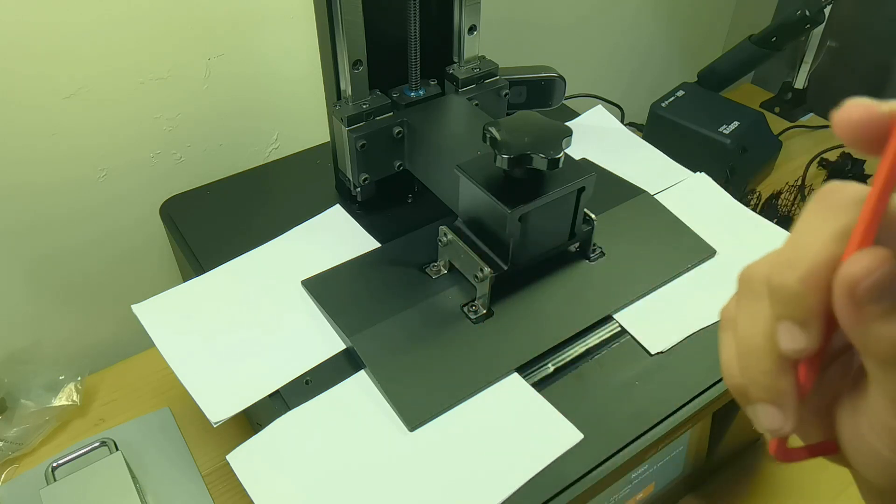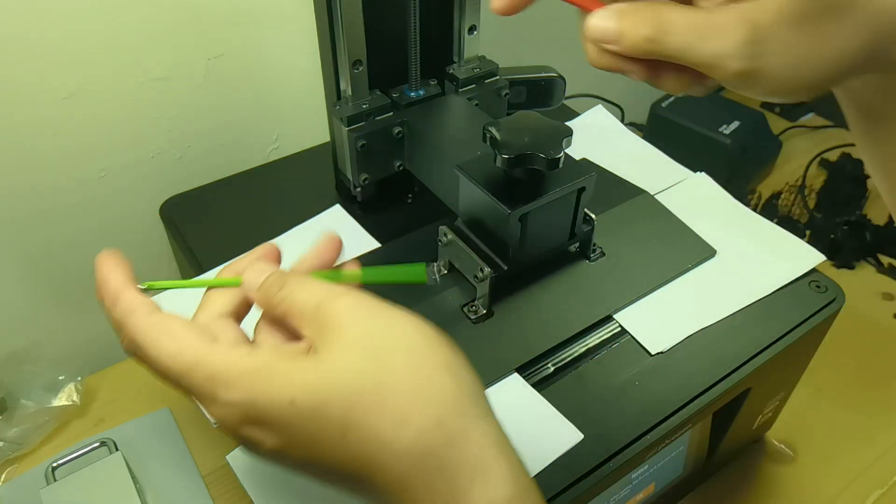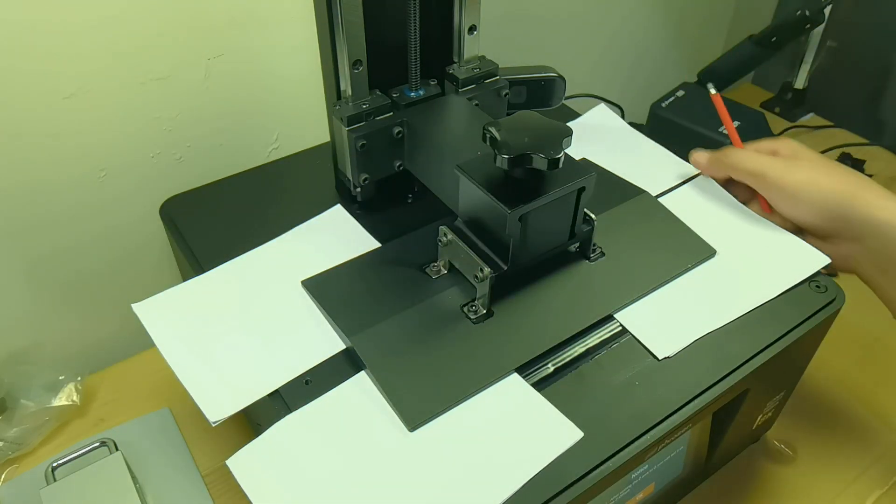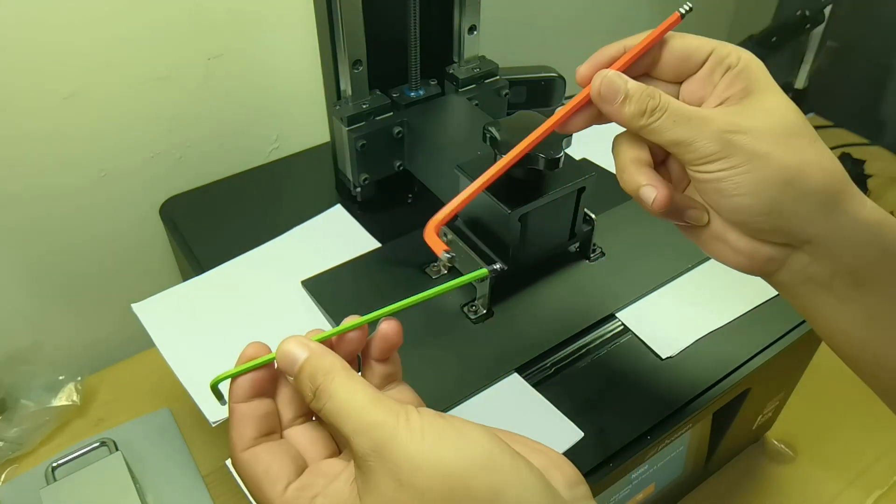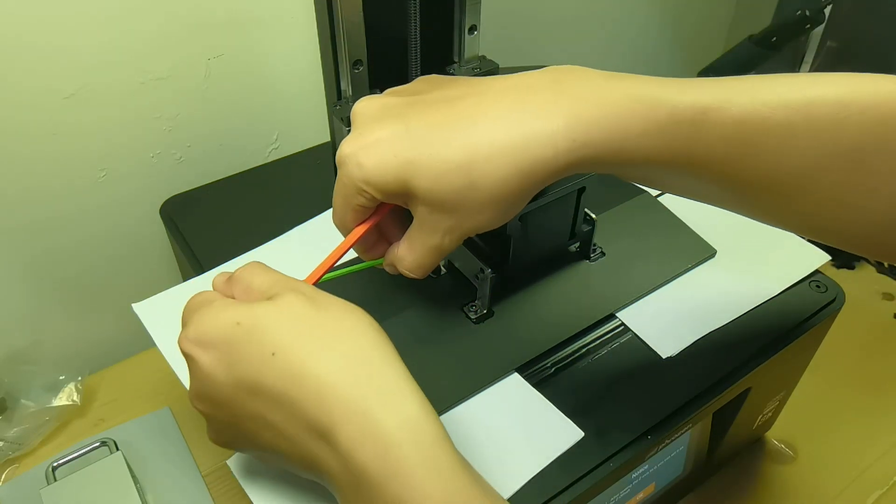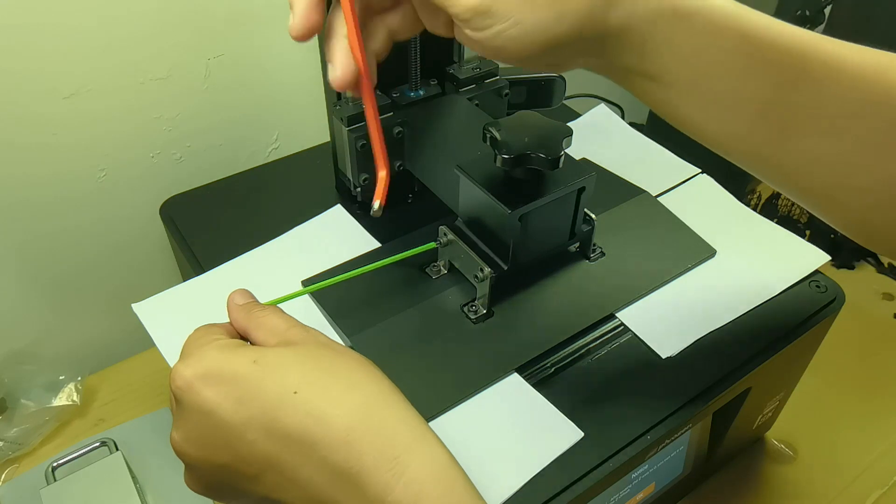And now for the second tip: this side here is very tight, over here is very loose. I will prepare two Allen keys and I will work on this side here. I will work on each corner one by one.